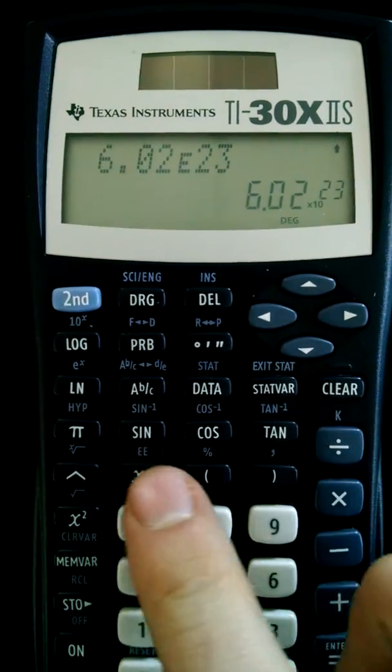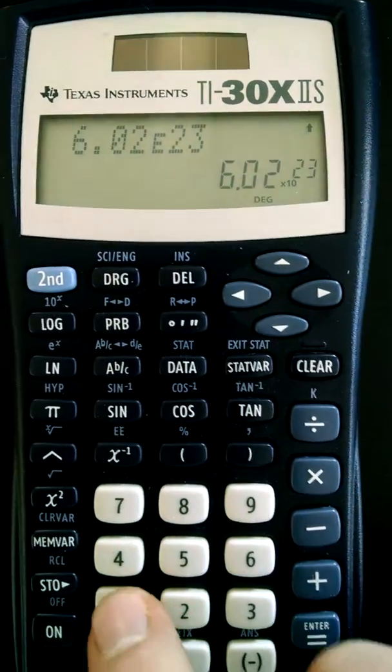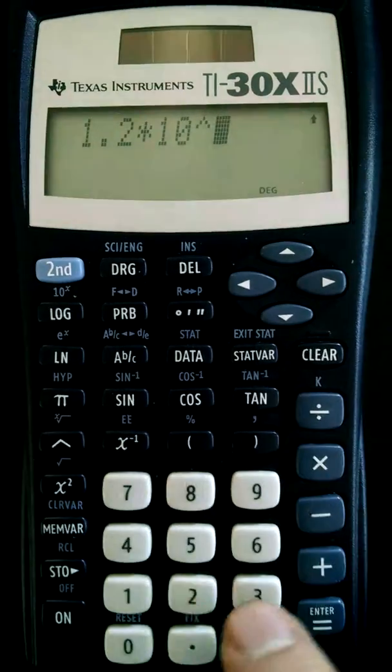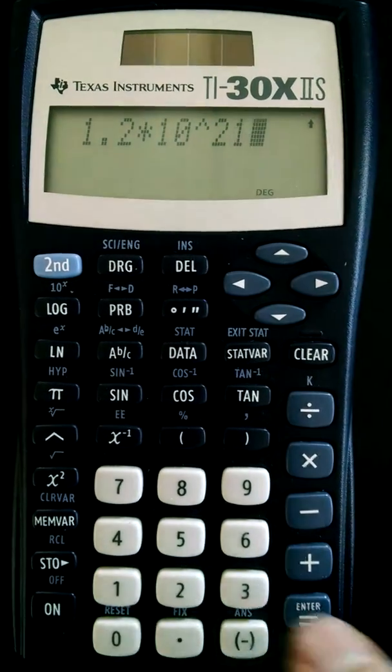So again, that's your E button. You're going to hit 2nd, and then that. It is much easier than hitting 1.2 times 10 carat 2, so I get 1, enter.